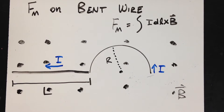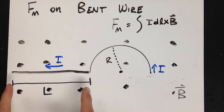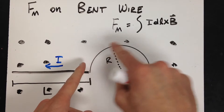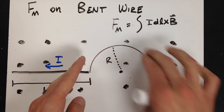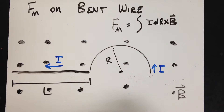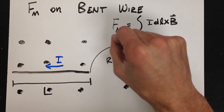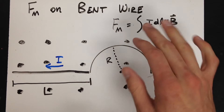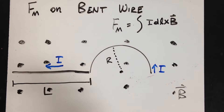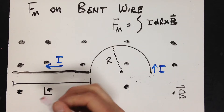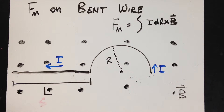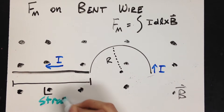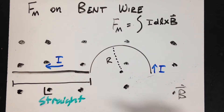To solve for the total force on the wire, we can investigate the force on the straight section and then look at the curved semicircular section. Looking at the equation for the magnetic force on a current-carrying wire, I'll do the straight section first. The straight section has a length L and carries current I.